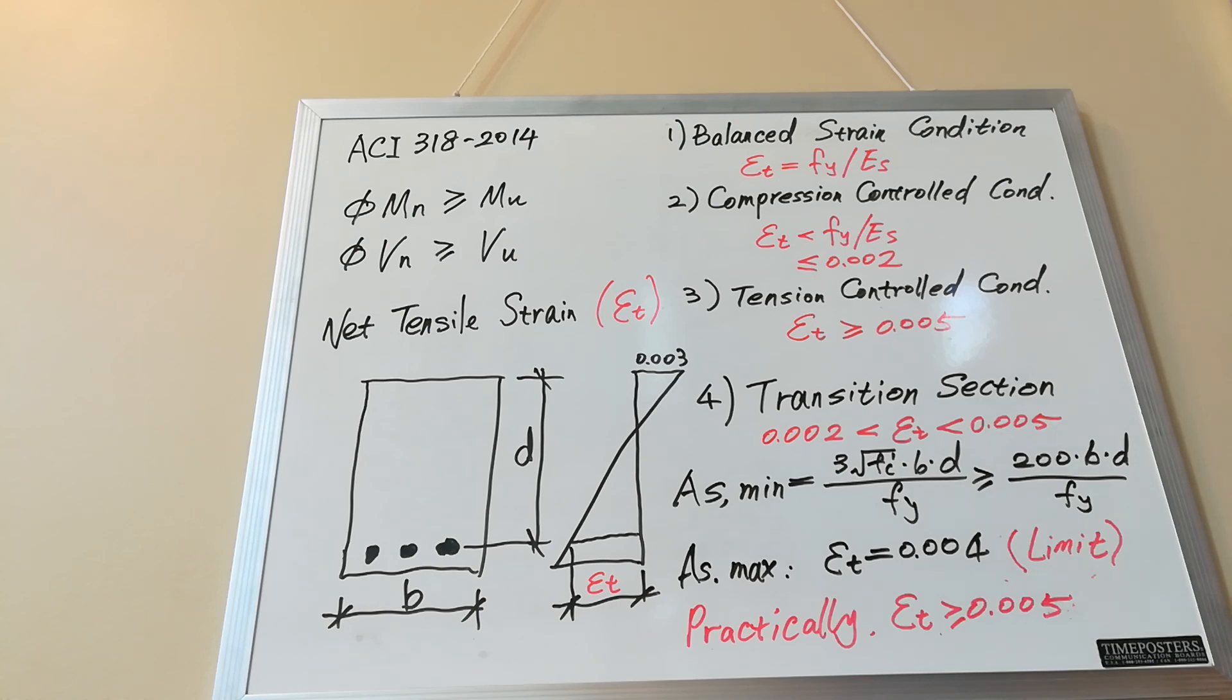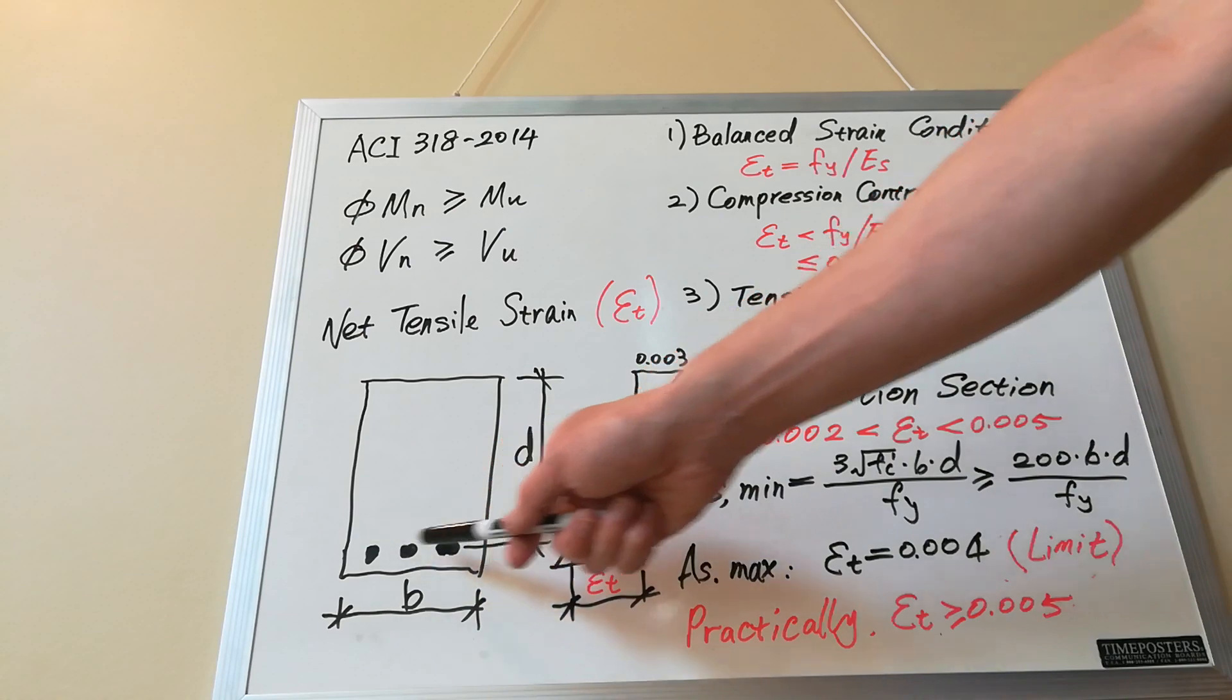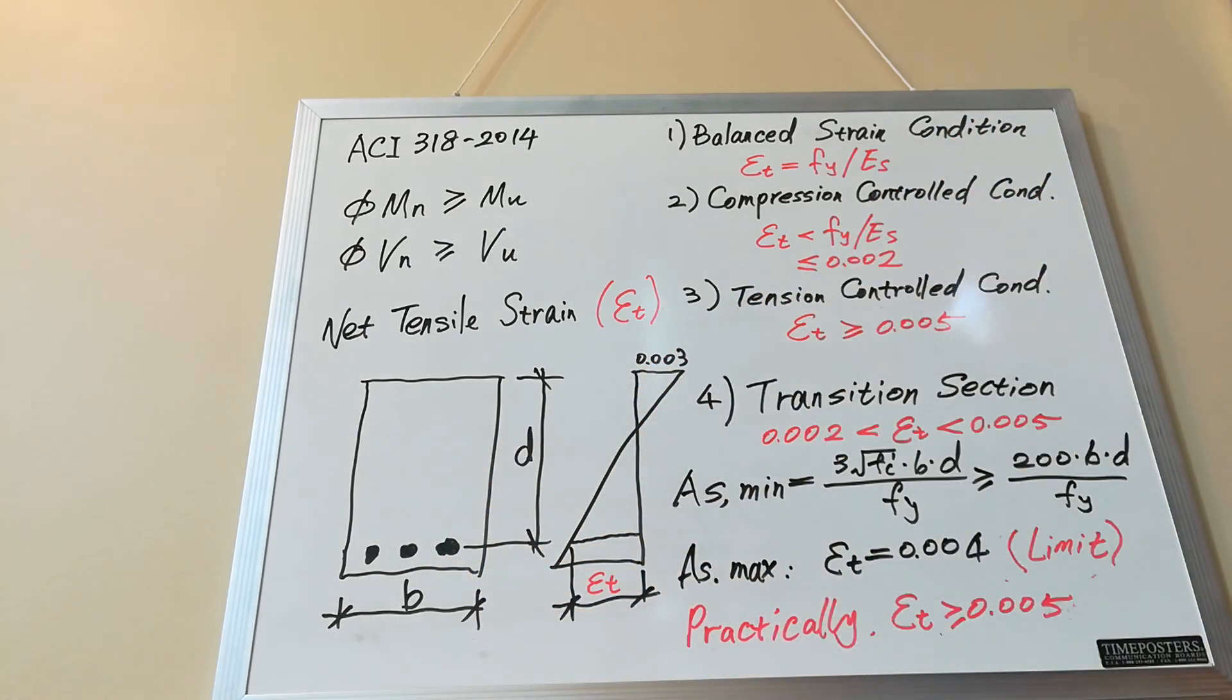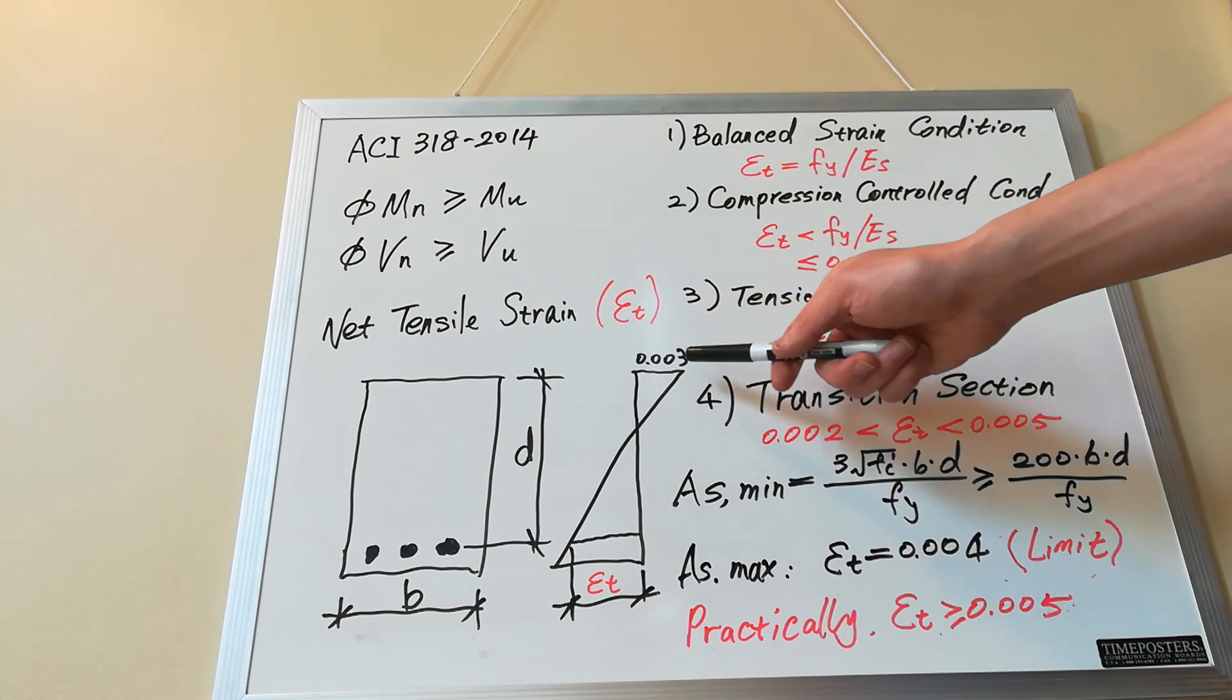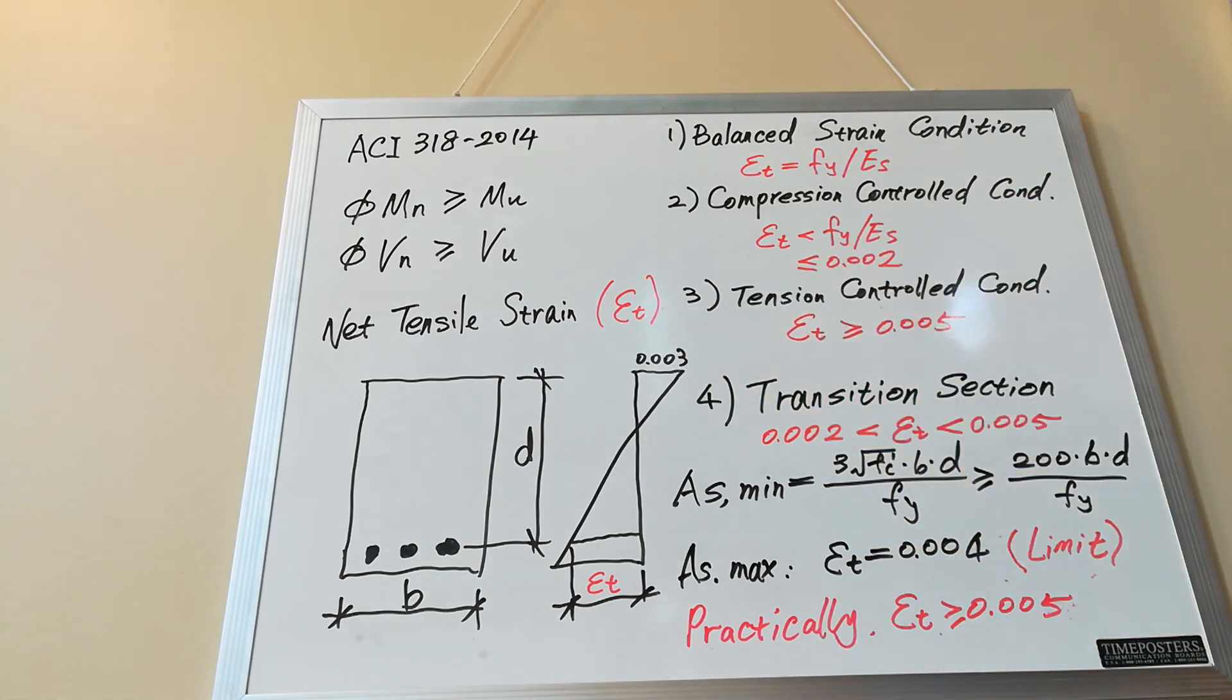Epsilon t is the tensile strain in extreme tension steel when the concrete strain at the extreme compression fiber reaches their limit, which is 0.003.